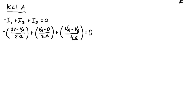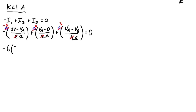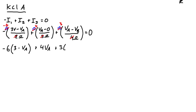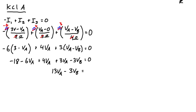To simplify, we multiply each term by the lowest common denominator, which is 12. So 12/2 gives a factor of 6, 12/3 gives 4, and 12/4 gives 3. Dropping units for clarity, we get: −6(3 − Va) + 4Va + 3(Va − Vb) = 0. Distributing and simplifying gives us the node A equation: 13Va − 3Vb = 18.